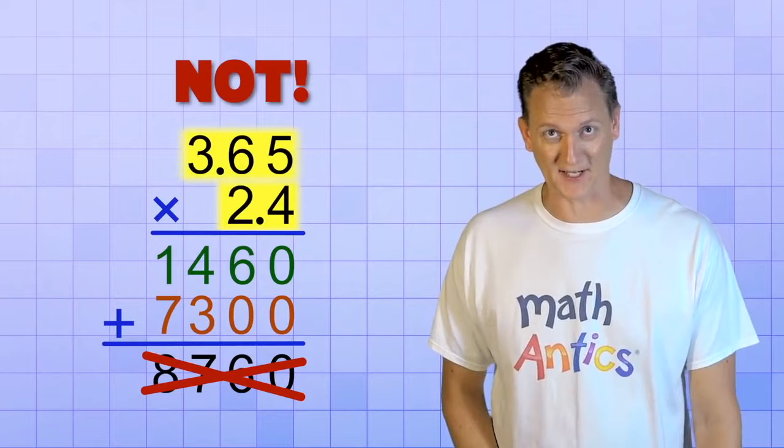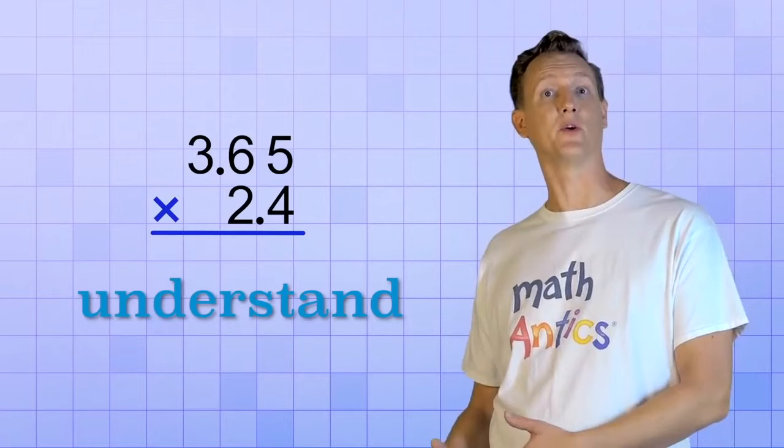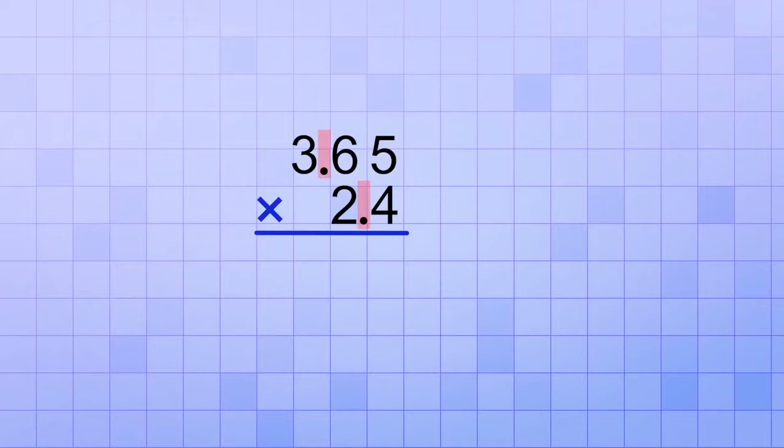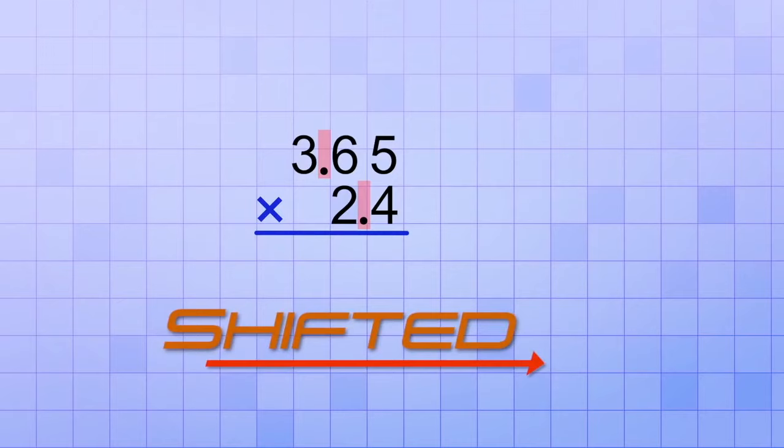To get the correct answer for the decimal problem, we've got to understand what's going on with those decimal points and why we just pretended they weren't there. The truth is, when we pretended that the decimal points weren't there, what we were really doing is pretending that they had been shifted until both of our numbers became whole numbers.